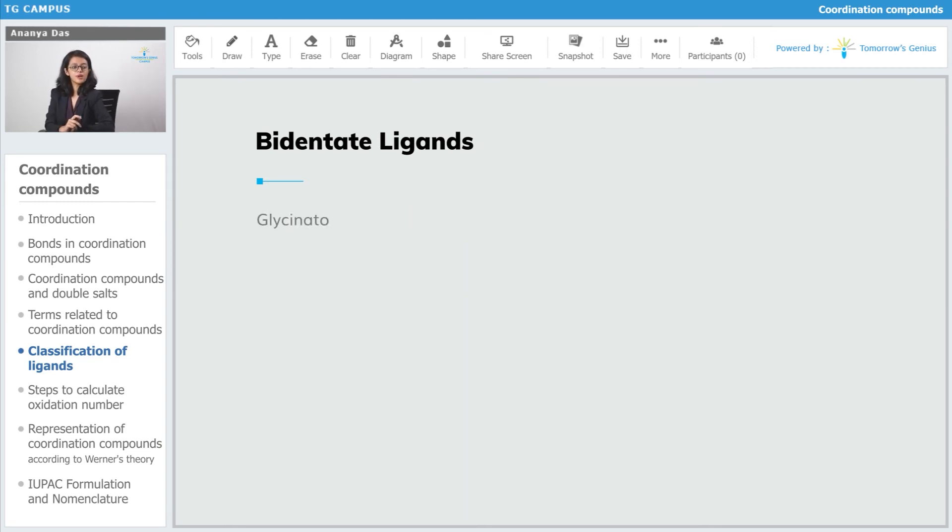The next bidentate ligand is glycinato. Glycinato is formed by glycine. Now, glycine is an amino acid.